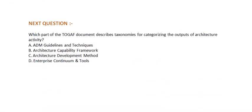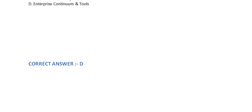Next question: Which part of the TOGAF document describes taxonomies for categorizing the outputs of architecture activity? Option A: ADM Guidelines and Techniques. Option B: Architecture Capability Framework. Option C: Architecture Development Method. Option D: Enterprise Continuum and Tools. The correct answer is Option D.